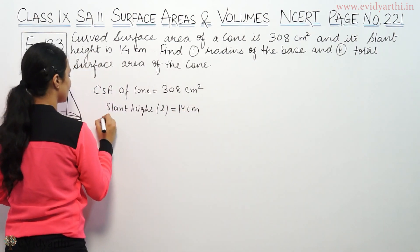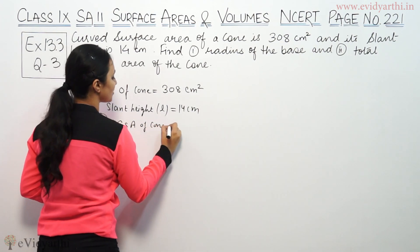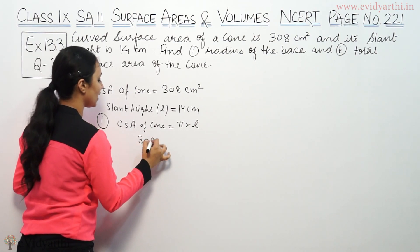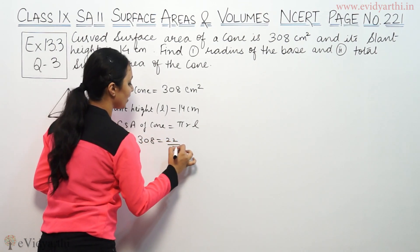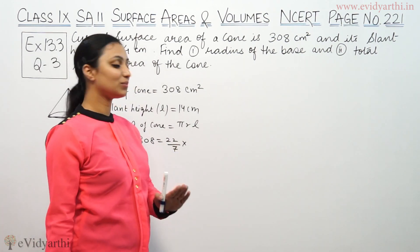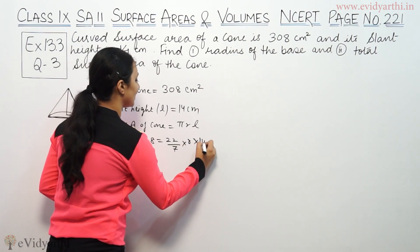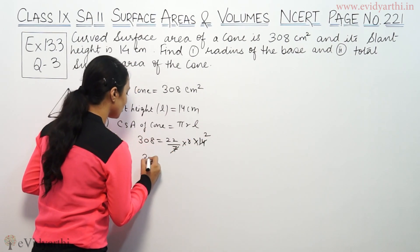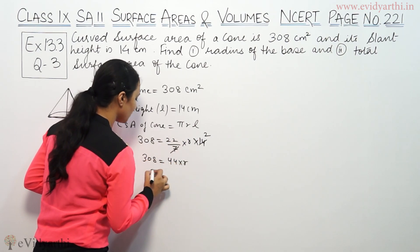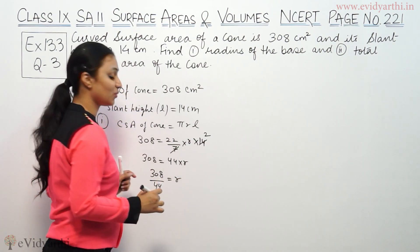We have to find radius of base. So, the curved surface area of a cone is πRL. The curved surface area of a cone is 308 cm². So, 308 is equal to 22/7 × R × 14.